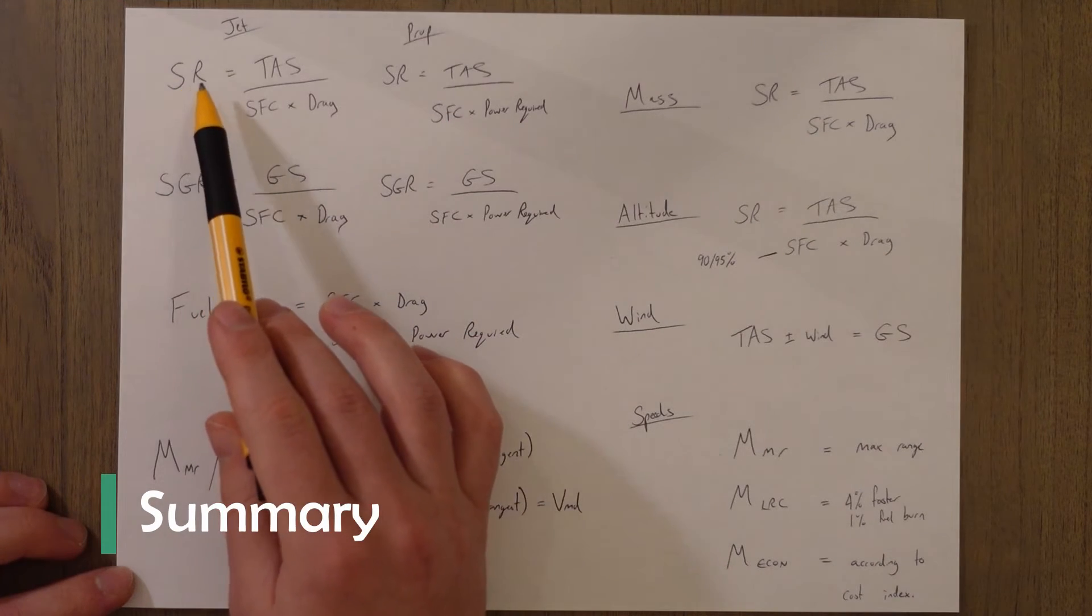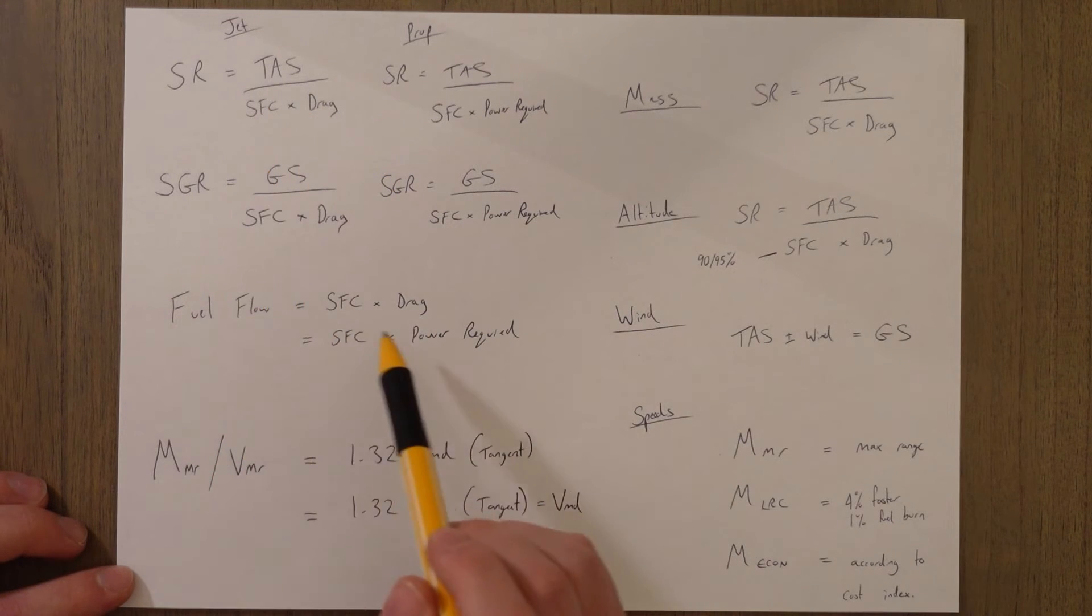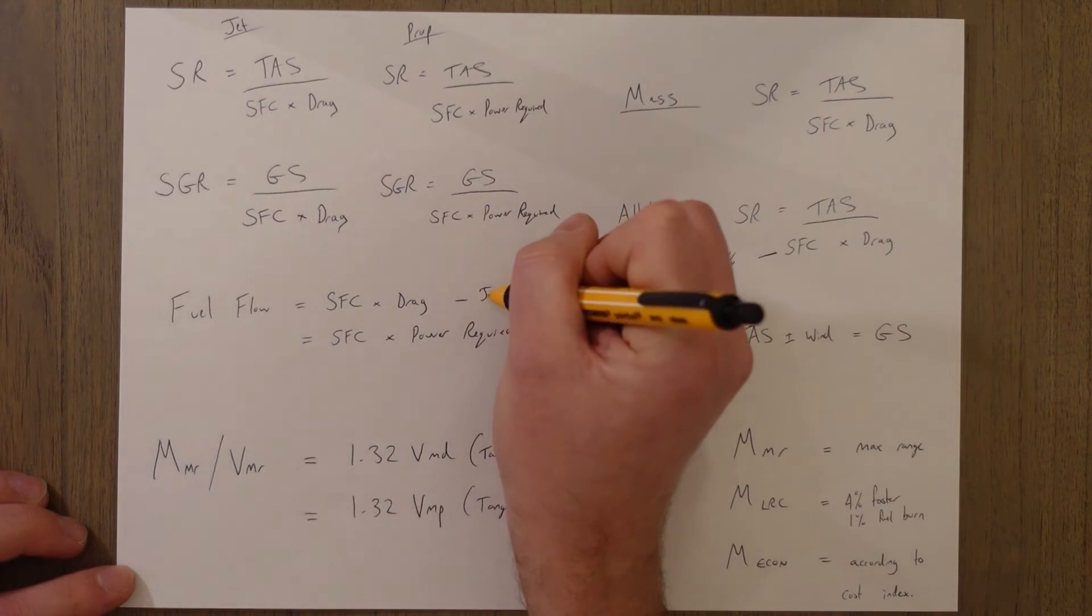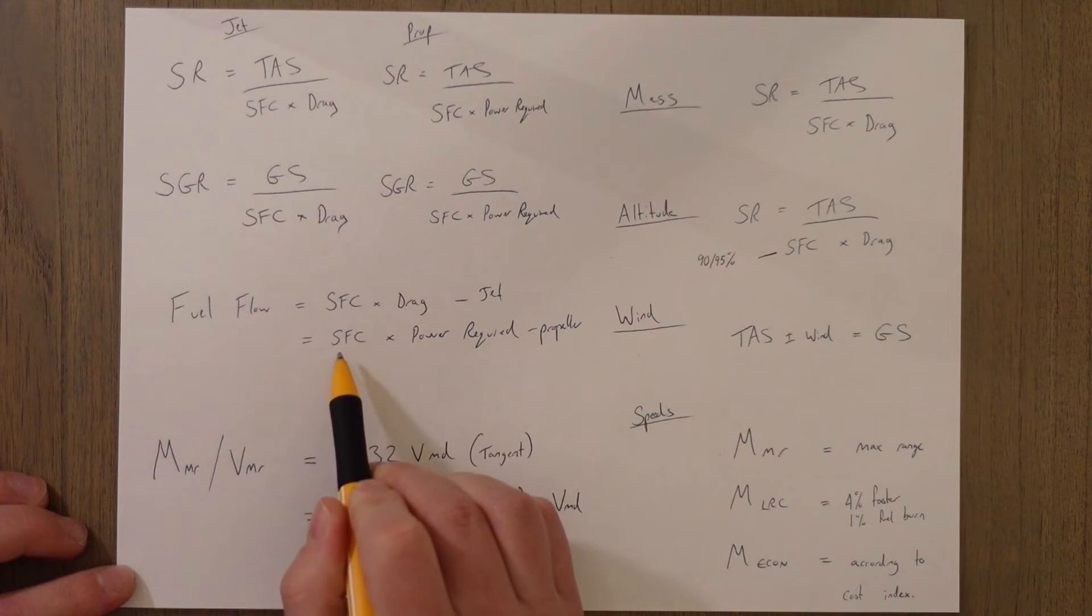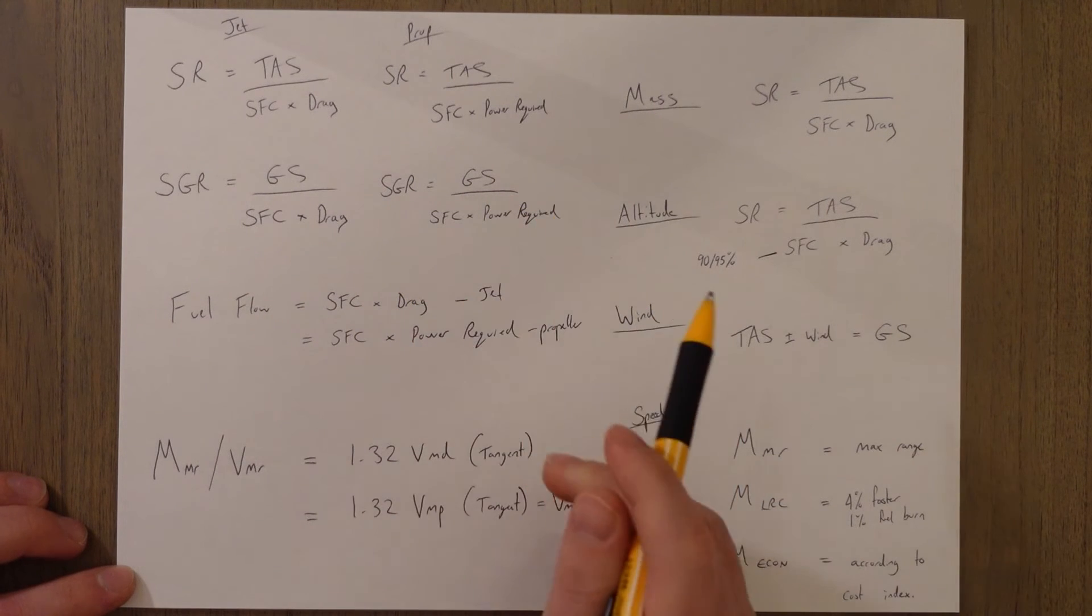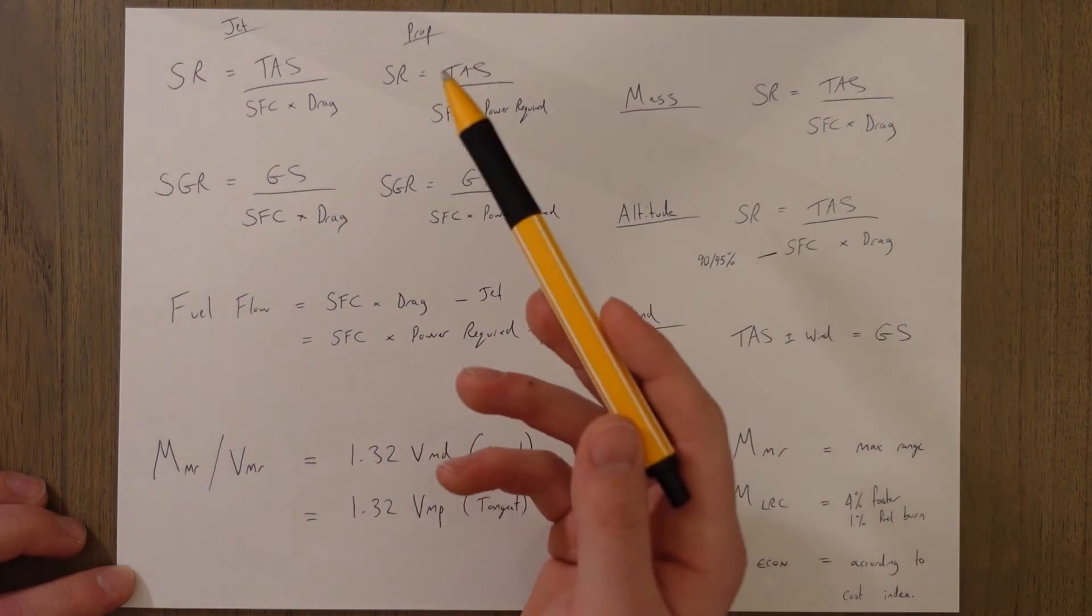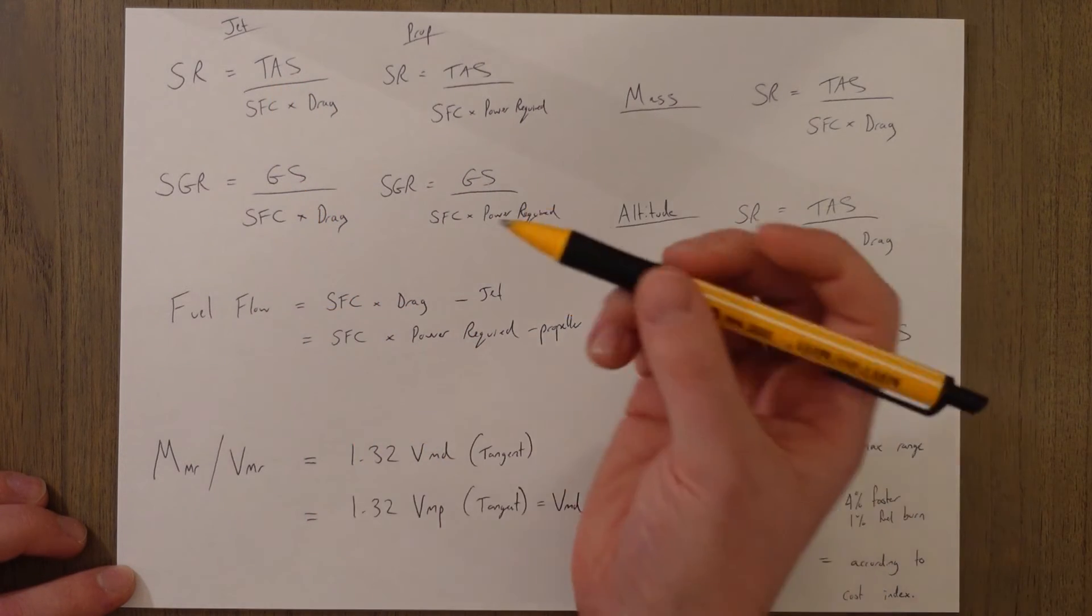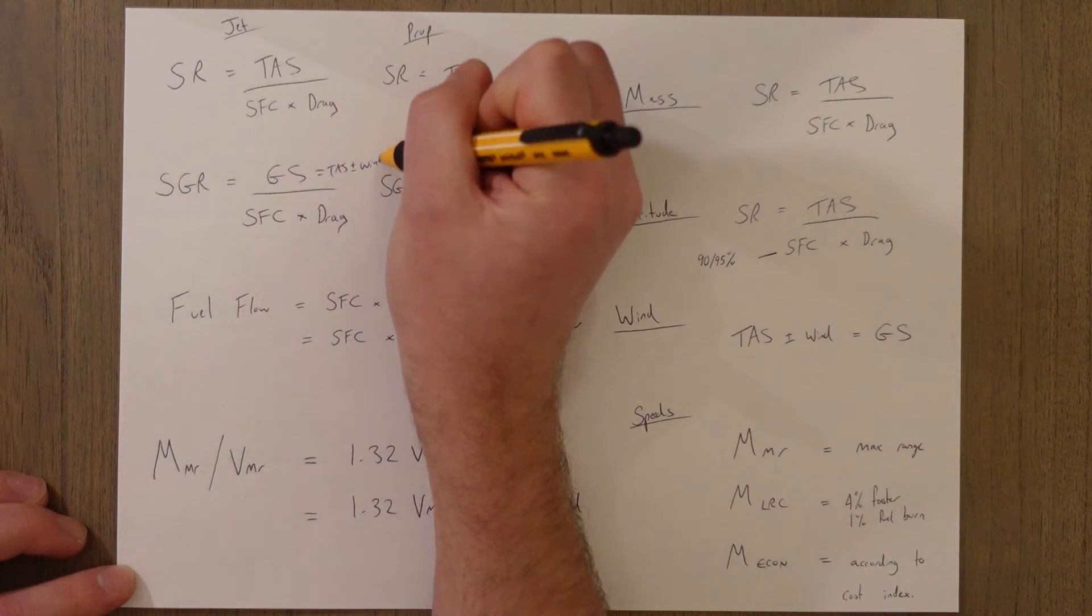Okay, so specific air range, or just specific range, is the true airspeed divided by the fuel flow, and the fuel flow is specific fuel consumption times drag for a jet, and for a propeller it is specific fuel consumption times power required. Think of drag as thrust required - maybe that might help. And if you want to convert them into specific ground range, you just need to factor in the wind, and to do that you just convert the TAS into a ground speed, because ground speed equals TAS plus or minus any wind component that's helping you.